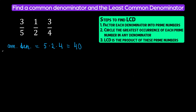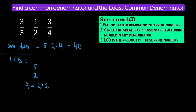Now let's find the least common denominator. To do that, we are going to break down each denominator into prime numbers. Our first denominator is five — it is already a prime number, there is nothing to break it down to. Two is also a prime number. The denominator four we can break down into two times two. So we wrote the denominator four as two times two — prime numbers.